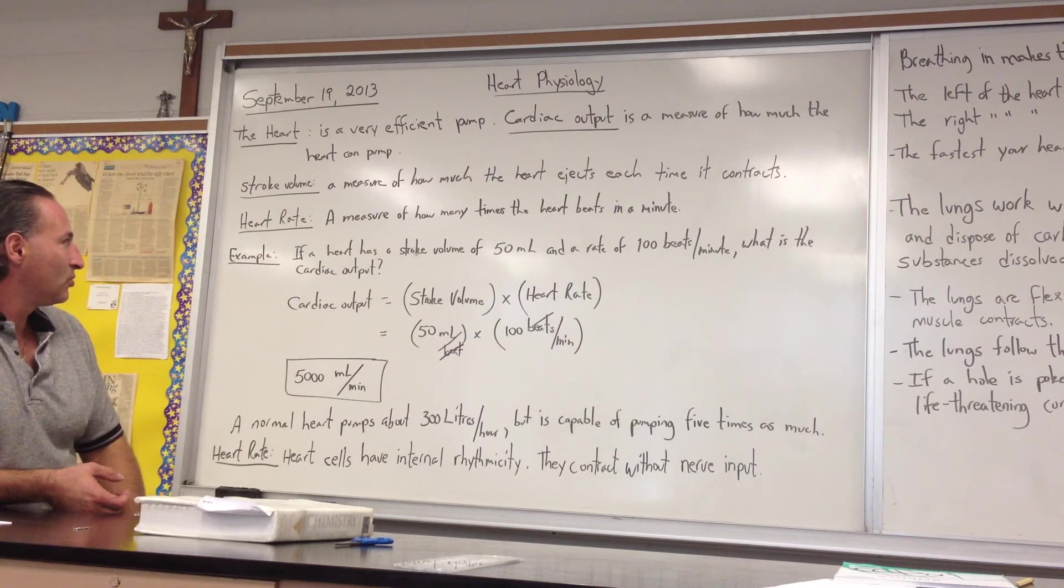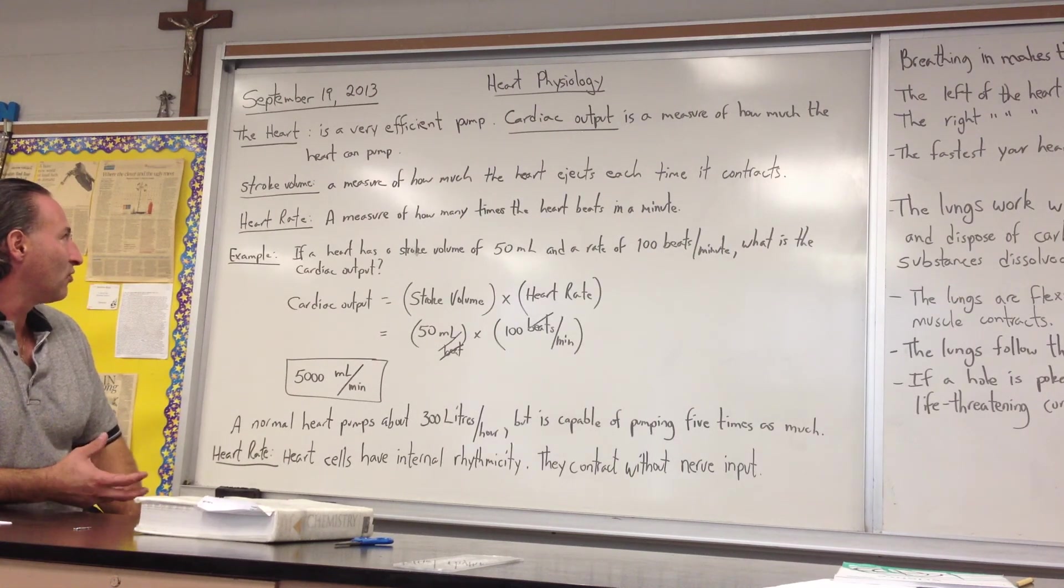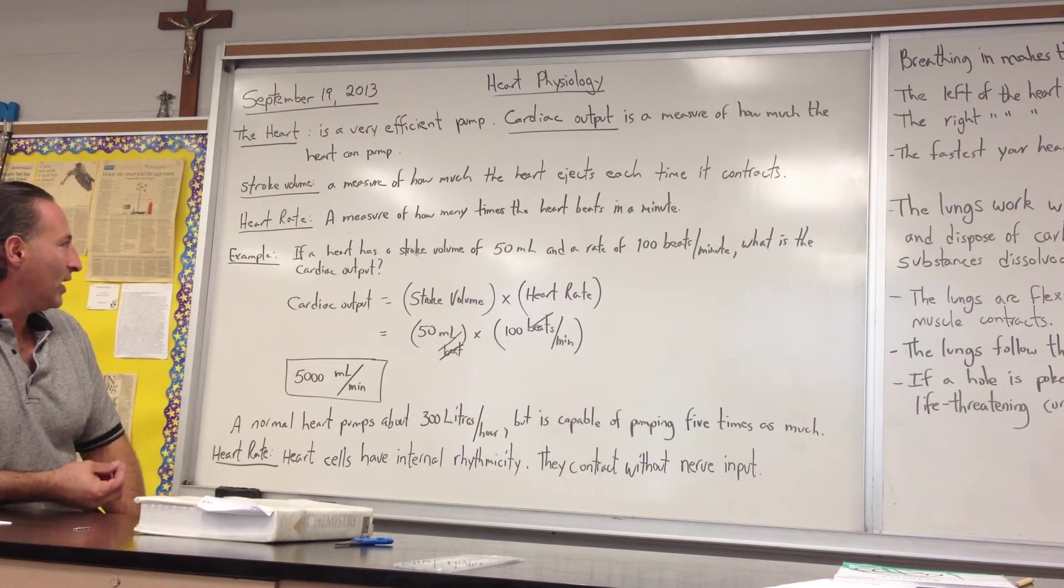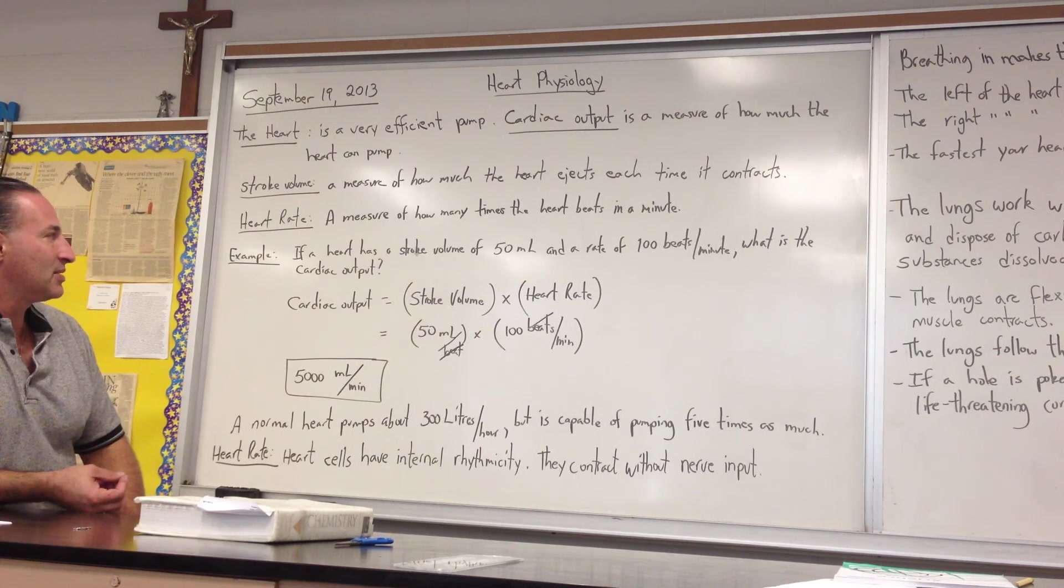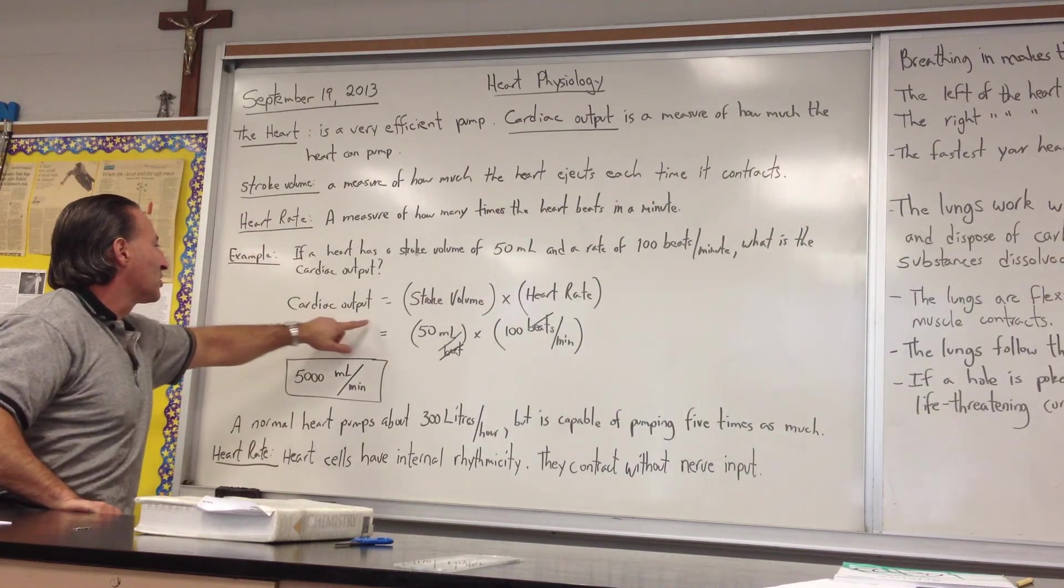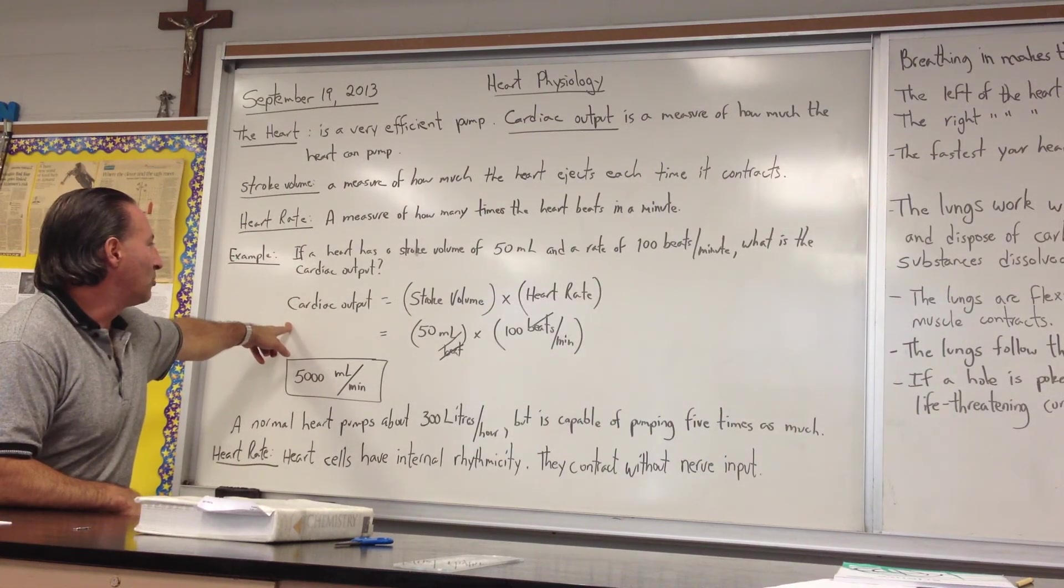There are two terms we need to be familiar with. One is the stroke volume, and it's a measure of how much the heart ejects each time it contracts. Heart rate, which is a measure of how many times the heart beats in a minute. When you multiply these two quantities, you get what's called the cardiac output.